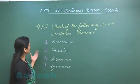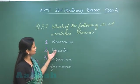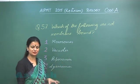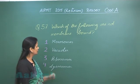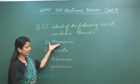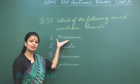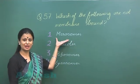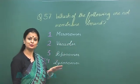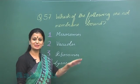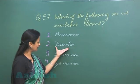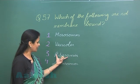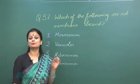In question number 57, we have to look for the structure which is without a membrane — which is not membrane-bound. Mesosomes are ingrowths of the plasma membrane and are present in prokaryotes. Vacuoles are surrounded by a membrane.